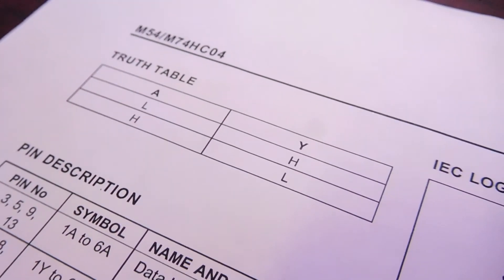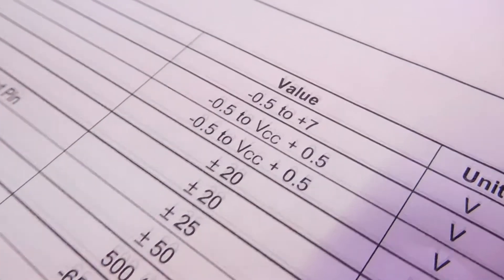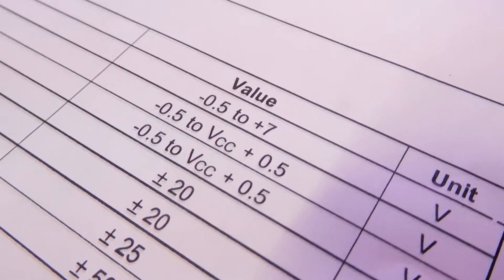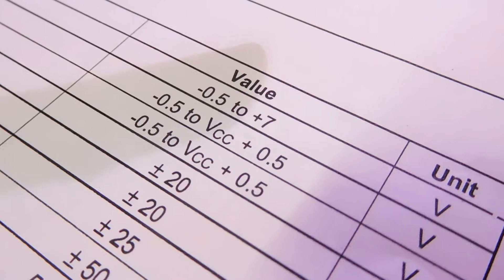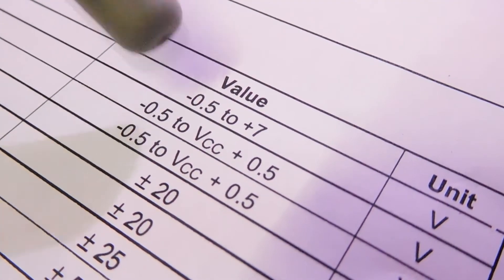We can see the truth table for this gate, which matches with my book's truth table. Important voltages are also given. The recommended supply voltage for this IC is 5 volts.